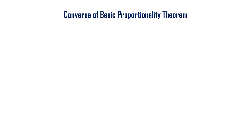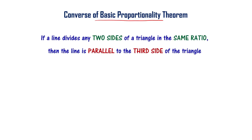Let us now learn about the Converse of Basic Proportionality Theorem, also known as the Converse of Thales' Theorem. If a line divides any two sides of a triangle in the same ratio, then the line is parallel to the third side of the triangle.